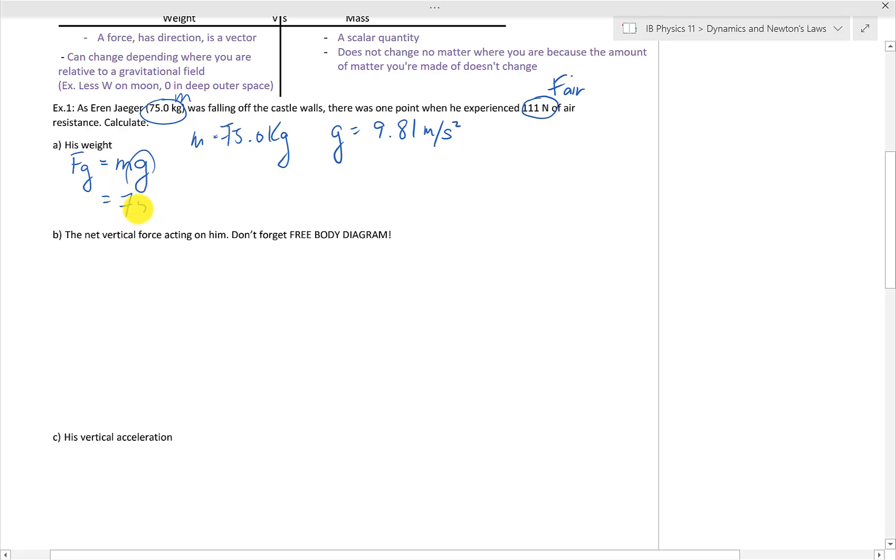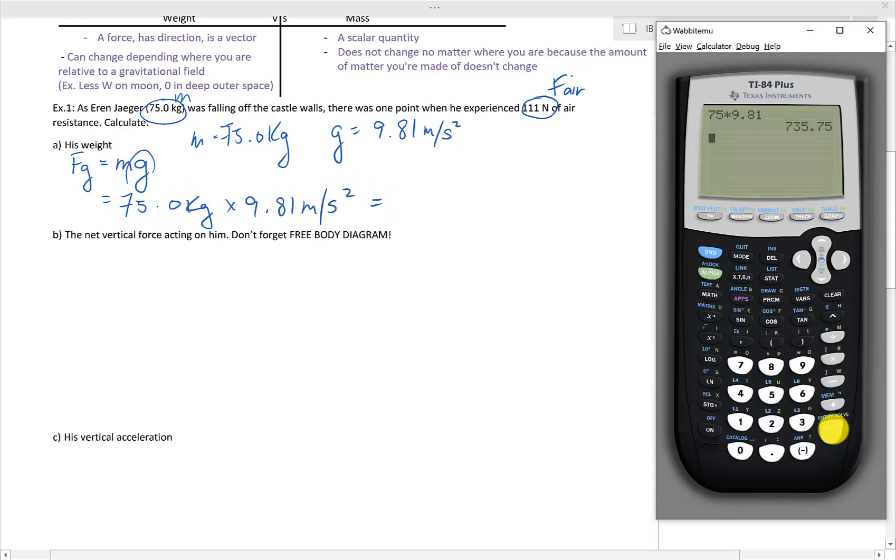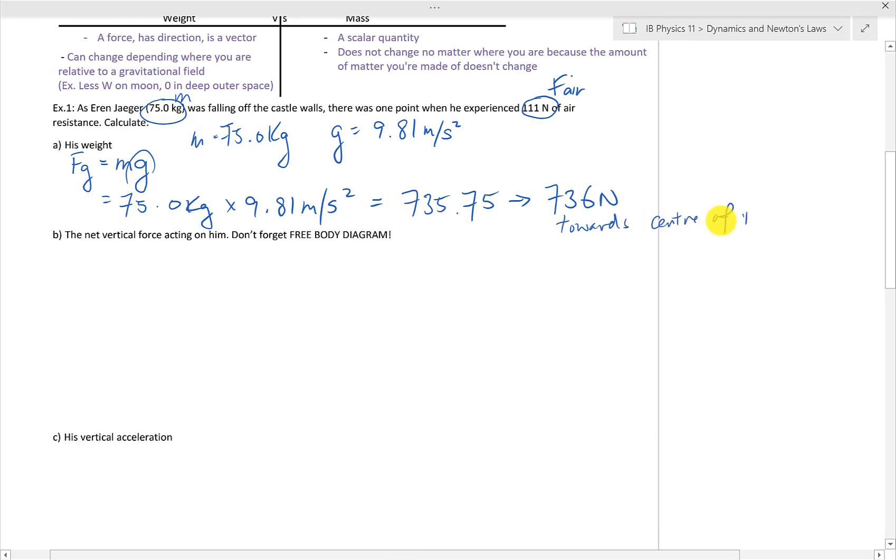So, if I substitute these in, I get 75 kilos times 9.81 meters per second. On the calculator, I get 735.75. Rounding off, we get 736 newtons.